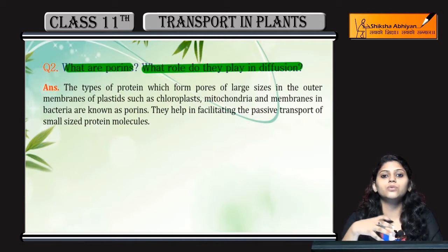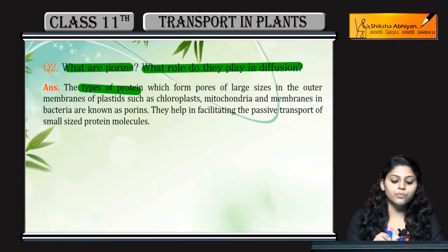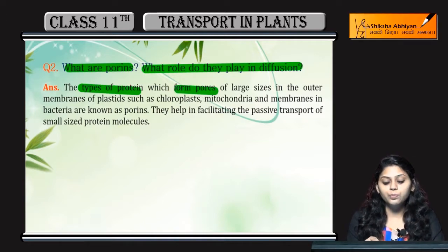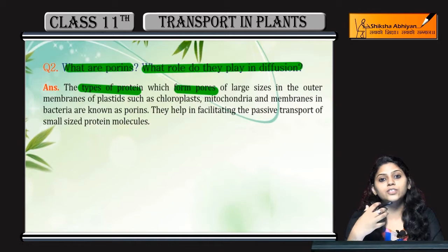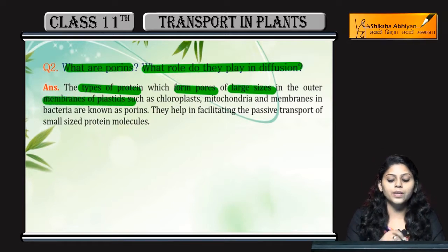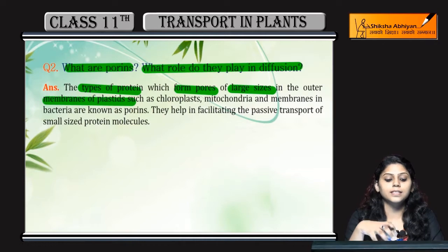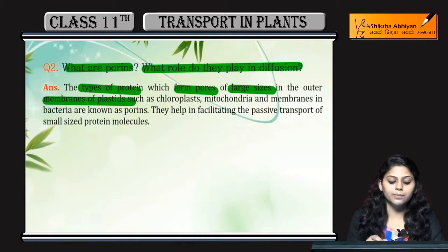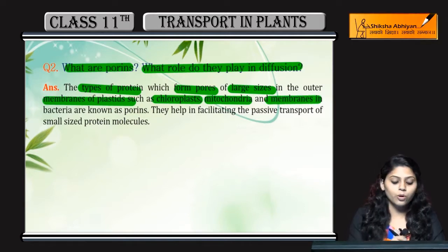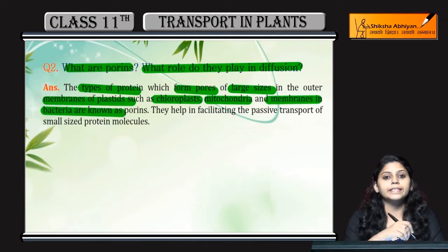Porins are types of proteins which form pores of larger size. They are found in the outer membrane of plastids — such as chloroplasts — mitochondria, and also in the membranes of bacteria. These are called porins.